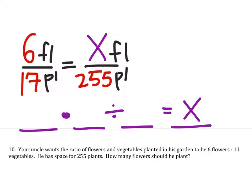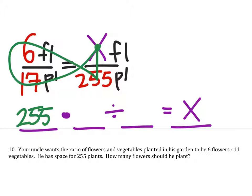So I start with the X, because that's where I will end. And again, we're going to make a little fish. And we can see, we go to the 255 first, and then the 6, and then the 17.